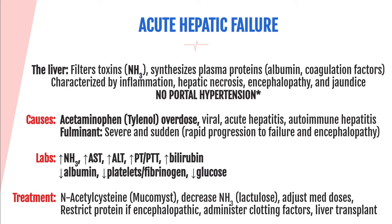The liver filters medications and toxins, and most significantly, it filters ammonia (NH3). It also synthesizes plasma proteins including albumin and coagulation factors such as prothrombin, fibrinogen, and other clotting factors. Acute hepatic failure is characterized by inflammation of the liver, hepatic necrosis with significant destruction of hepatic cells, encephalopathy due to ammonia accumulation, and jaundice due to increased bilirubin.